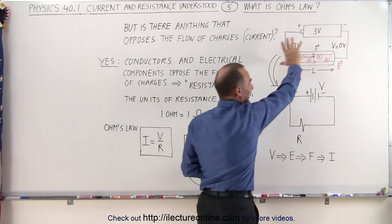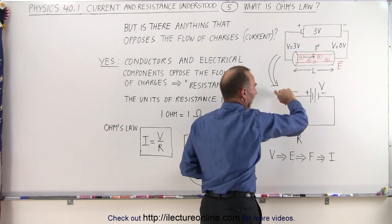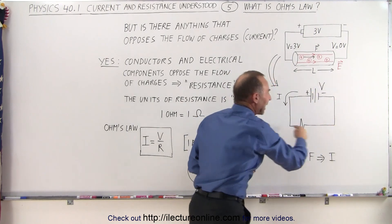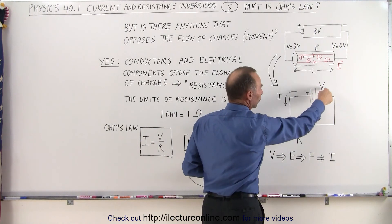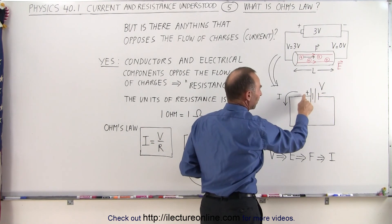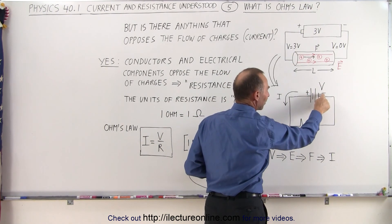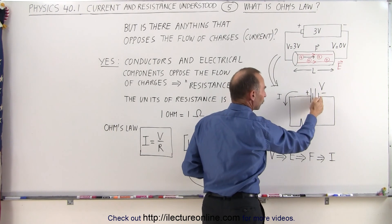We can take this diagram of a circuit and write it as a schematic. This is what we would call an electrical schematic where batteries are represented by this symbol. There's the voltage provided by the battery. We have the positive end and the negative end of the battery, the high potential versus the low potential.